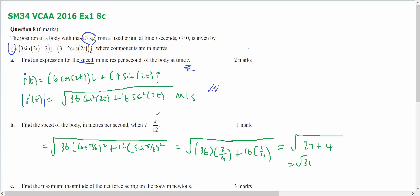And part b, find the speed of the body when t equals pi on 12. So into this I substitute pi on 12 and that gives me this which gives root 31 as being the speed in meters per second.